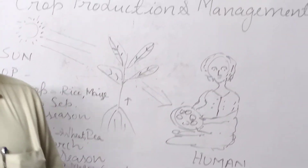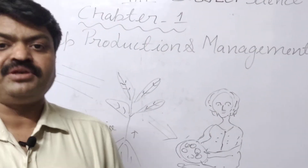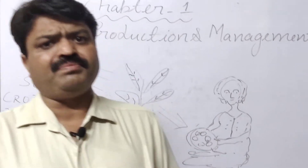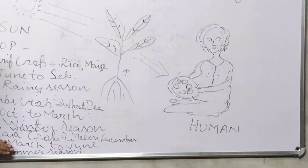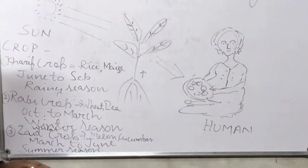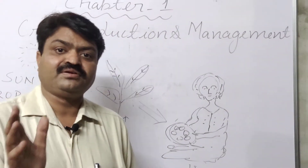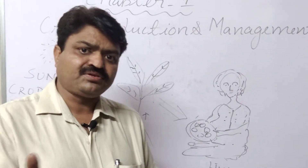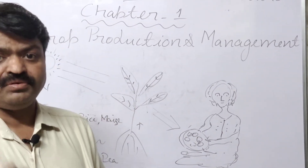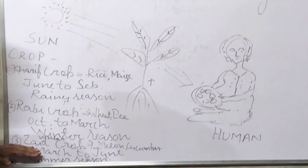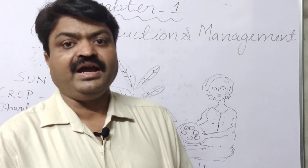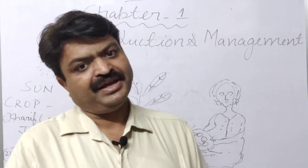The third type of crop is Zayed crop, which is not given in your book but you should try to learn it. Zayed crops are grown between March and June and are generally known as summer season crops. Crops in this category include melon, watermelon, gourd, and cucumber. In our next segment, we will learn about agricultural practices and how farmers grow crops. Thank you very much.